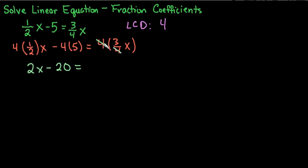And here 4 divided by 4 is just 1, so we would have 1 times 3, which gives us 3x.